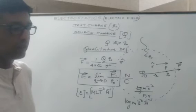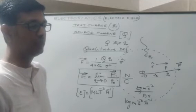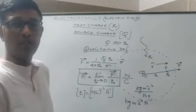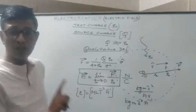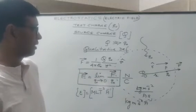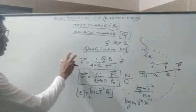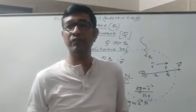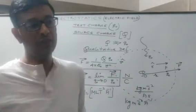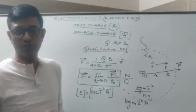Another unit for electric field is volt per meter, which we will discuss in a later section once we are clear with potential and potential difference — thereafter we will find the relationship between electric field and potential. So that is the basic concept of electric field. Now, electric field in a given region is represented by field lines, which can be known as electric lines of force or simply field lines.